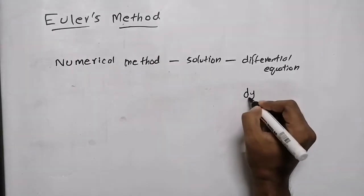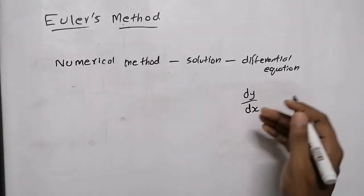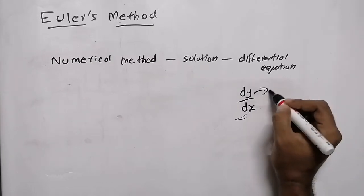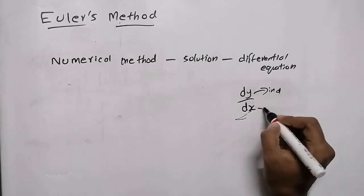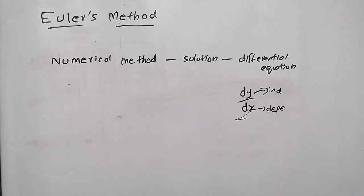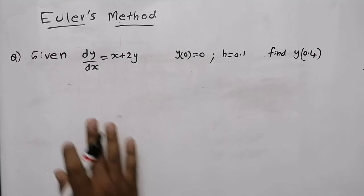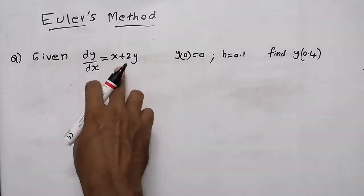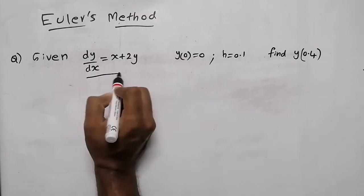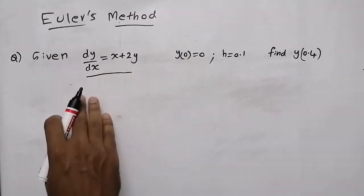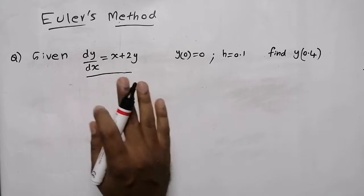What is a differential equation? dy/dx, where y is the independent variable and x is the dependent variable — y will be depending on x. We can learn about that by doing a question. Here, given dy/dx equal to x plus 2y — that is a differential equation. We need to find the solution by using Euler's method.